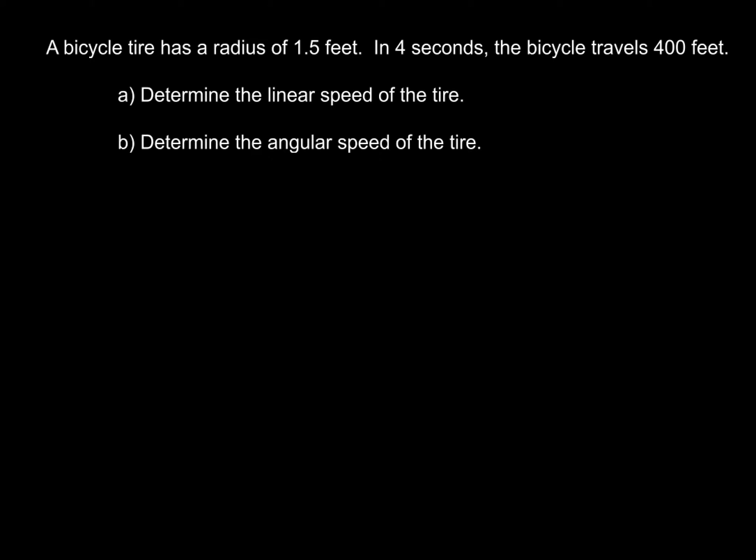Now this is a really common type of problem that you will see in a pre-calculus level course. So here we go. A bicycle tire has a radius of 1.5 feet. In four seconds, the bicycle travels 400 feet. We've got to do two things. First, determine the linear speed of the tire, and second, determine the angular speed of the tire.